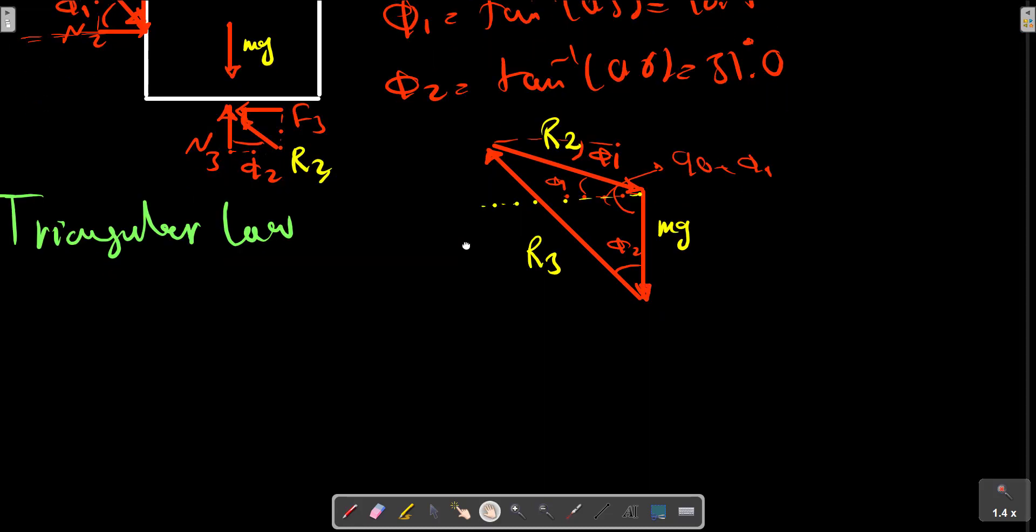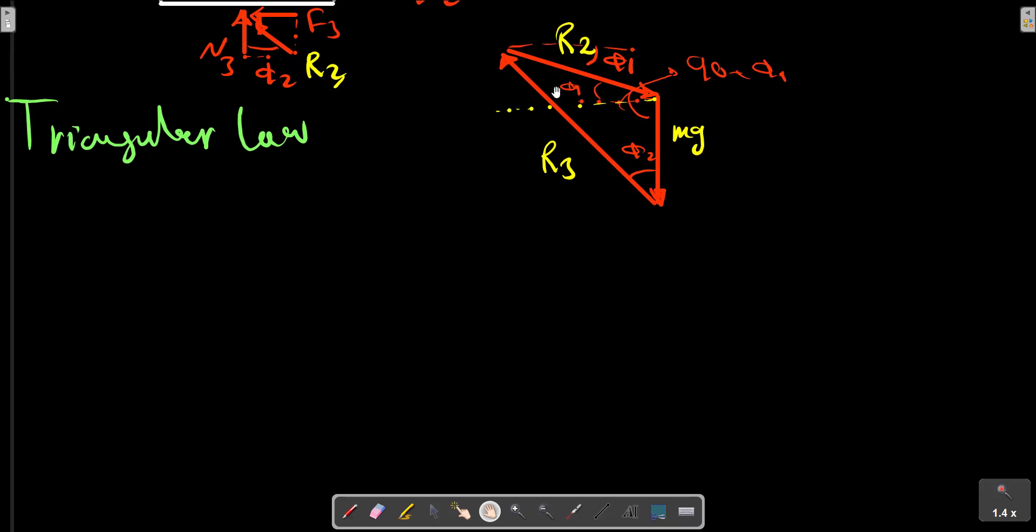In this case we can use sigma Fx equals zero: R2·cos(phi_1) minus R3·cos(phi_2 + theta) equals zero.